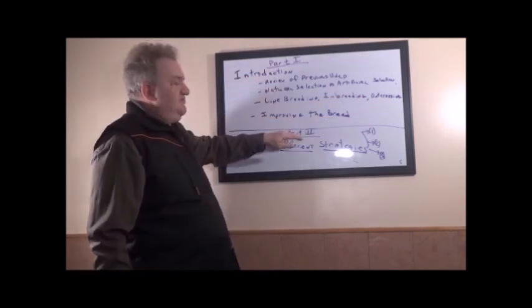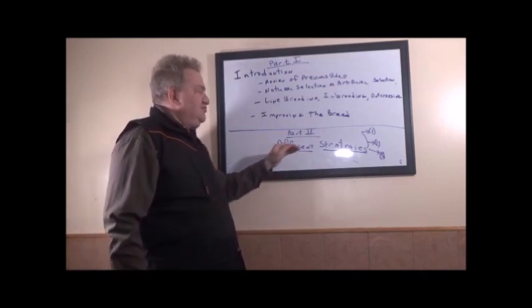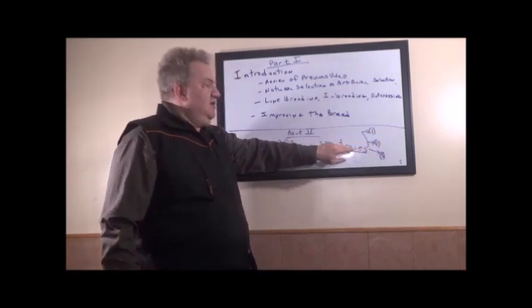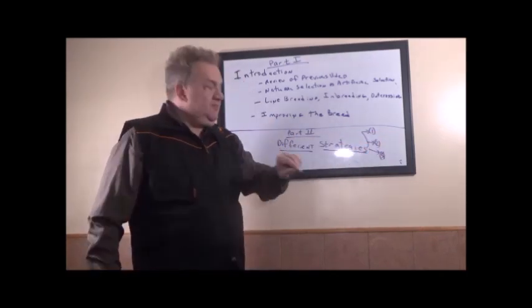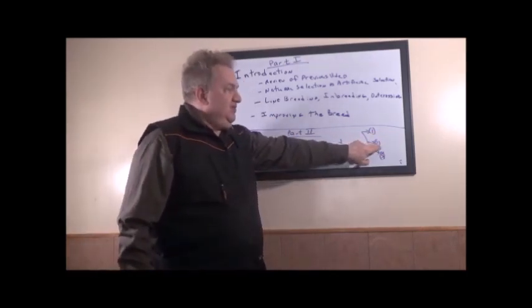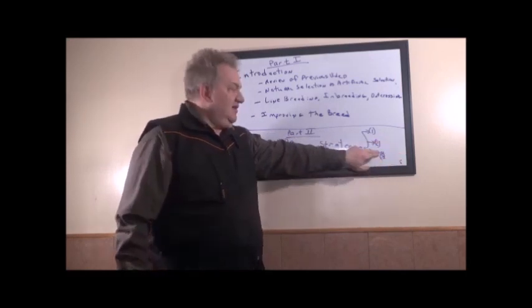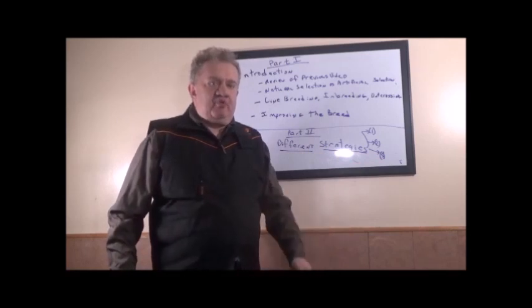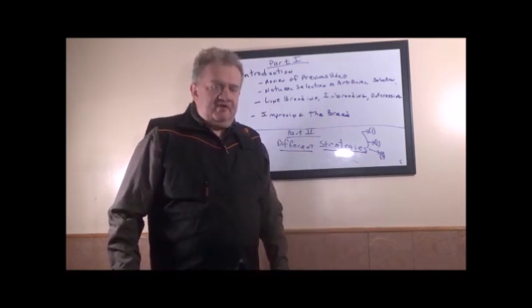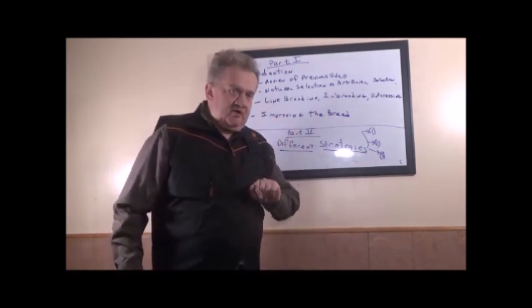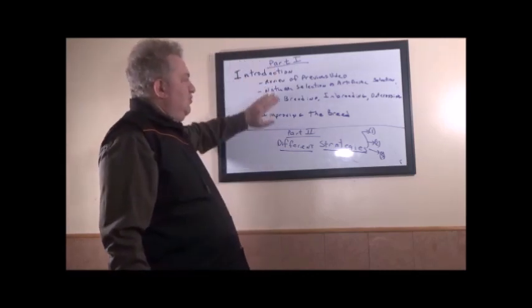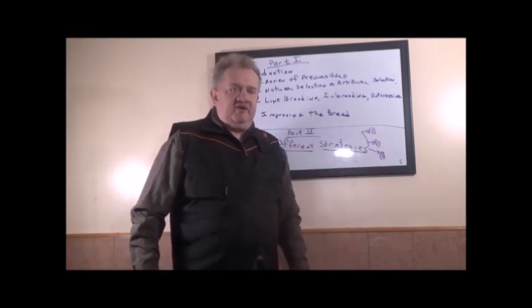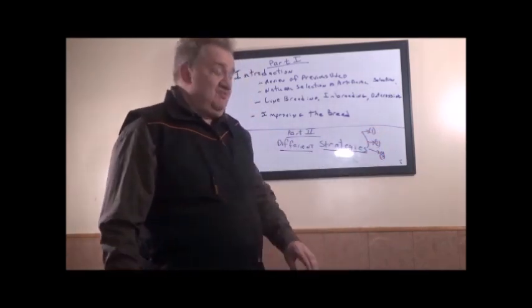In the second part of this video, we're going to cover different strategies. Strategy one will be the half sibling program, that will be video two. Video three will be the cousin program, that will be video three. And the third video will be the uncle to niece program as an inbreeding strategy, and that will be video four. So introduction is video one, half siblings, cousins, and uncle to niece will each have their own video to describe the strategies.